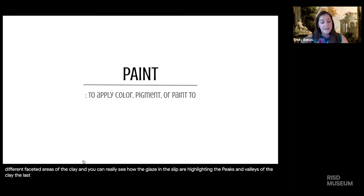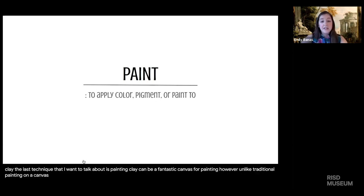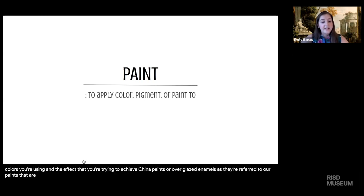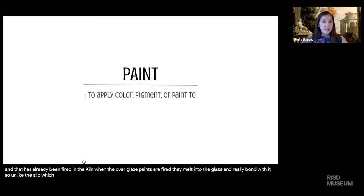The last technique is painting. Clay can be a fantastic canvas for painting; however, unlike traditional painting on a canvas, you still need to fire the ceramic in a kiln after it's painted — often multiple times, depending on how many colors you're using and the effect you're trying to achieve. China paints, or over-glaze enamels, are paints applied layer by layer on a ceramic that already has a base coating of glaze (called an under-glaze) and has already been fired in the kiln. When the over-glaze paints are fired, they melt into the glaze and bond with it, unlike slip which sits on top of the clay.